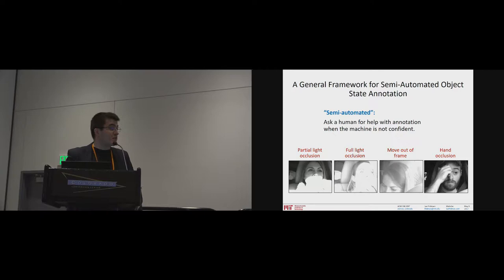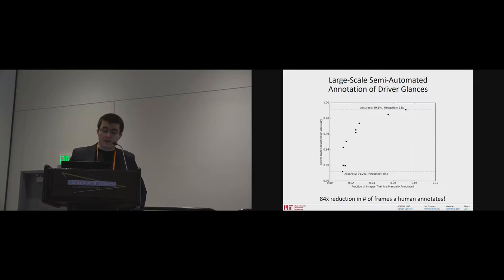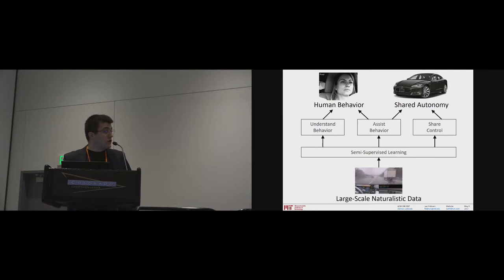And those edge cases are occlusions, one of the biggest problems in driving. Lighting variations, also huge. Full light-based occlusions, just moving out of frame, partial light occlusions of the various features of the face. And so what this allows us to do, the classification approach, is to automatically classify where a driver is looking, and only go to the human being for when the classifier is uncertain. And that allows us to reduce 80 to 100-fold the amount of work that a human being needs to do in manually annotating all of this.